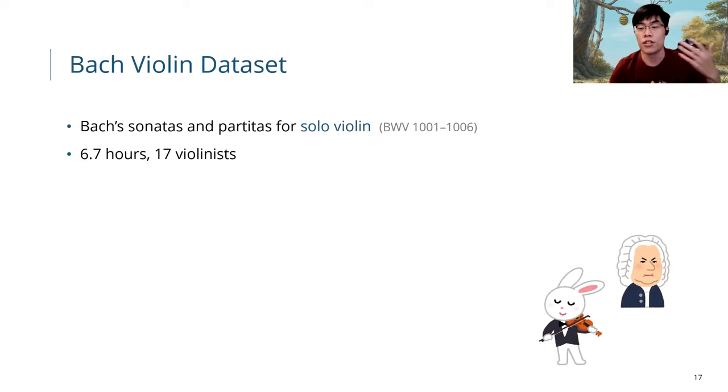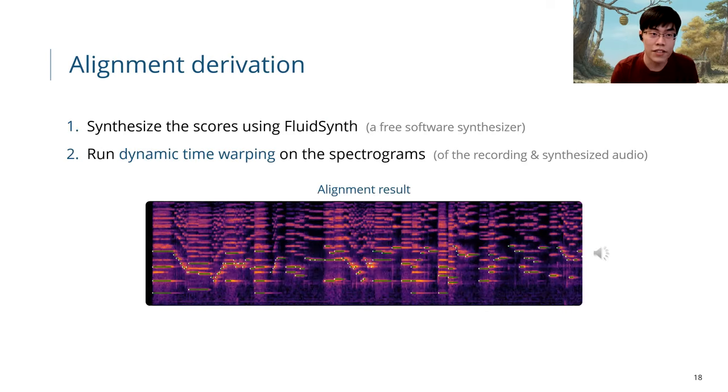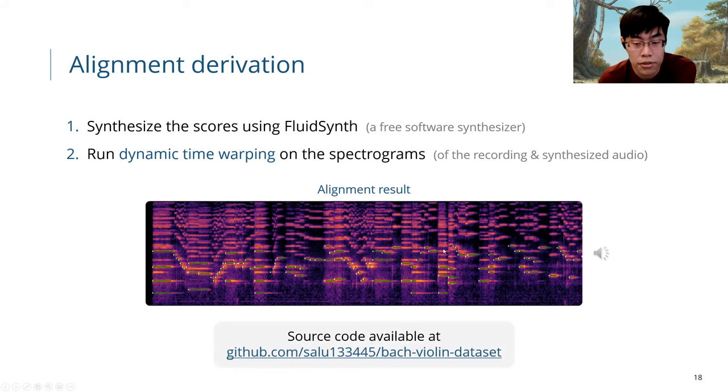For the data, since there aren't many data sources that we have, we built a new dataset called Bach Violin dataset. It consists of 6.7 hours of Bach's sonatas and partitas for solo violin. They are all high-quality studio recordings freely available online. This dataset is available, and we also try to derive the alignment between the recordings and the scores. Basically, we synthesize the scores using a free software synthesizer, and then we run dynamic time warping on the spectrograms of the recording and the synthesized audio. The alignment result, as you can see here, is really nice.